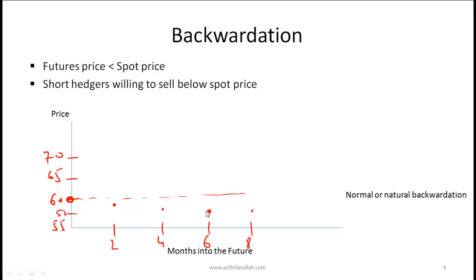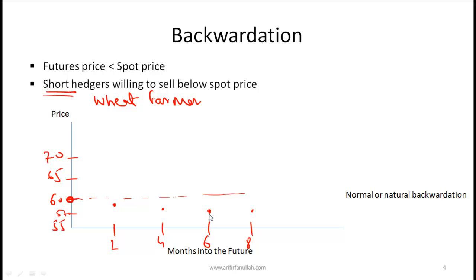Why might this happen? This might happen because short hedgers are willing to sell below the spot price. For example, consider the market for an agricultural commodity such as wheat. The short hedgers here are the wheat farmers. Their concern is that their harvest will be ready for sale in 6 months, and if there is an oversupply and the price of wheat falls a lot, that will be bad for them. To hedge against the risk of prices falling, they are willing to sell below the expected future price.